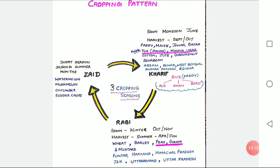Some of the most important rice-growing regions are Assam, West Bengal, coastal regions of Odisha, Andhra Pradesh, Tamil Nadu, Kerala and Maharashtra. Recently, Paddy has also become an important crop of Punjab and Haryana. In states like Assam, West Bengal and Odisha, three crops of Paddy are grown in a year — these are Aus, Aman and Boro.